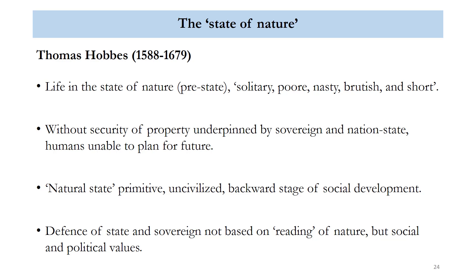For Hobbes, property and the state become really important. Unless we have these things to take us out of the state of nature, which is pretty nasty, we're essentially doomed. In part he's reacting to what he sees as the chaos of the English Civil War. One of his conclusions is that we need a strong sovereign, a strong state, underpinned by notions of private property that are policed and reinforced by the state. For Hobbes, this pre-natural state is something primitive, uncivilized and backward.